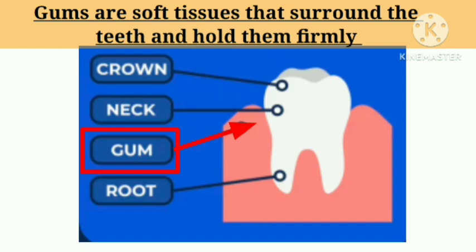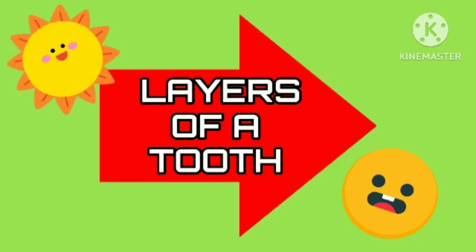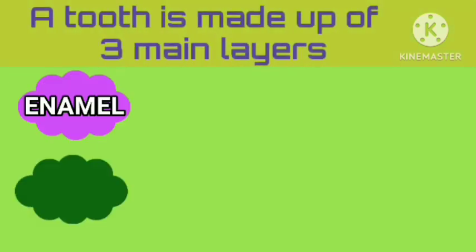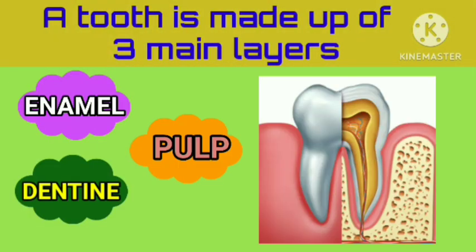Gums are soft tissues that surround the teeth and hold them firmly. Generally a tooth is made up of three main layers. They are enamel, dentine and pulp.